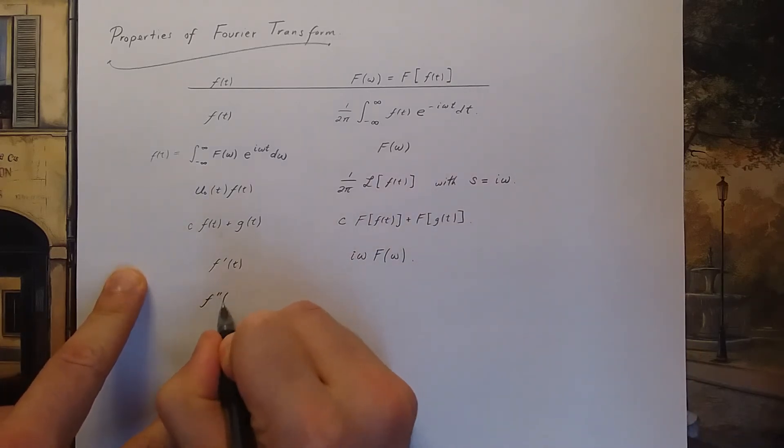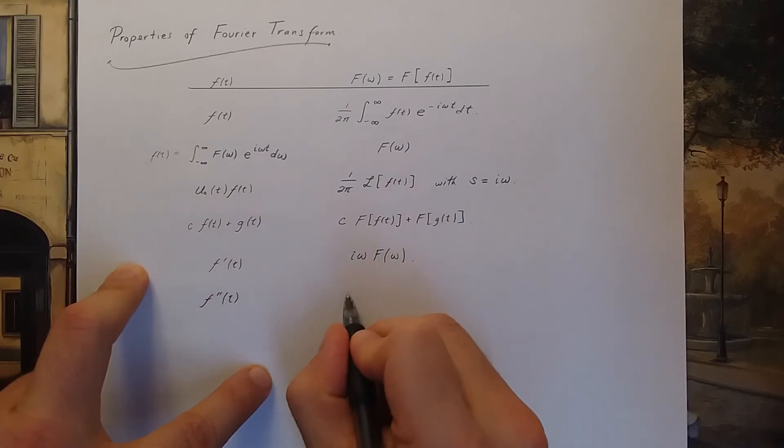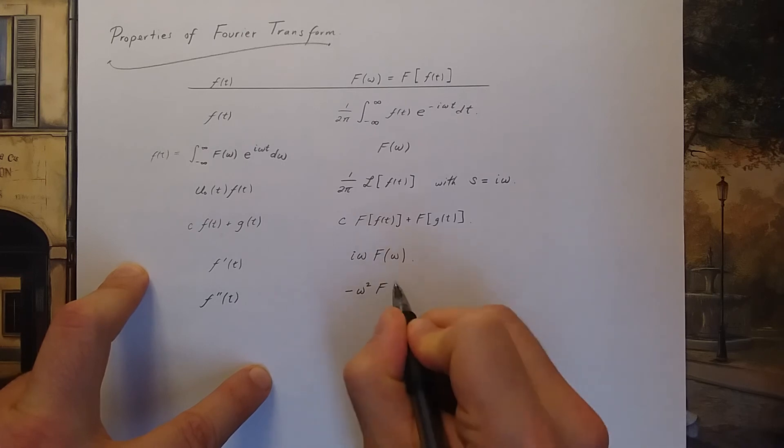Of course that implies that the second derivative would be i omega squared times your Fourier transform. In other words, negative omega squared times the Fourier transform of your function.